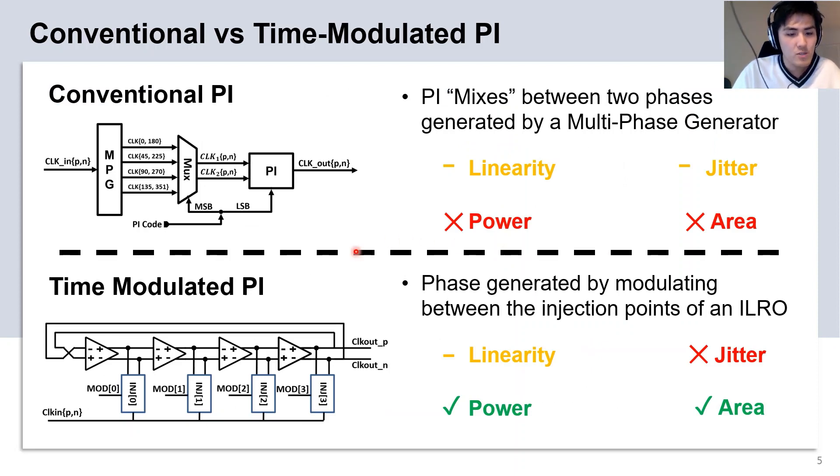The conventional PI interpolates by mixing two phases from the output of a multi-phase generator. Overall, these architectures burn a lot of power and can occupy a lot of area. On the other hand, the time modulated PI combines all of these elements into a single injection locked ring oscillator and interpolates by shifting the injection point of the clock. This significantly reduces the power and area of the overall circuit.